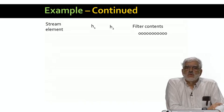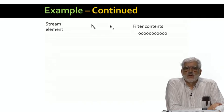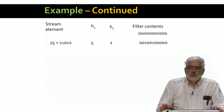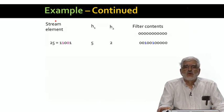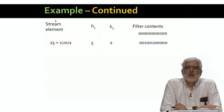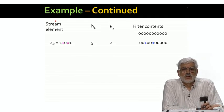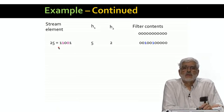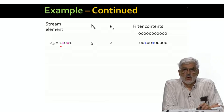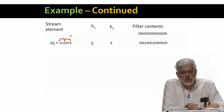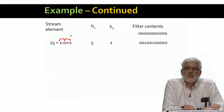Here's what happens when three integers arrive at the stream input. Initially, all 11 bits of the bloom filter are 0. The first integer is 25. We show its value in binary. With the odd numbered positions counting from the right in black, and the even positions in red. H1 is formed from the odd positions. And we see 1, 0, 1.